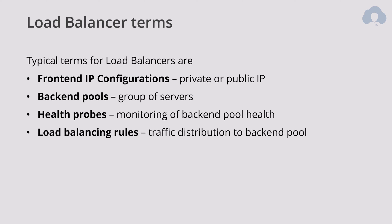Next up are load balancing rules. This is how you distribute the traffic to your backend pools — one or more backend pools for your load balancer. You specify things like what kind of IP (IPv4 or IPv6), what ports you're listening to, whether it's TCP or UDP, and which backend pool you're redirecting to for this kind of traffic. This is your main logic for how the load balancer will distribute traffic.